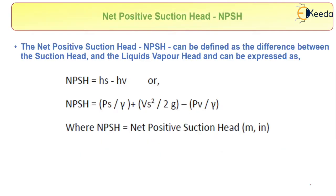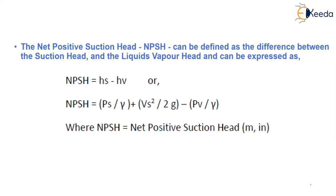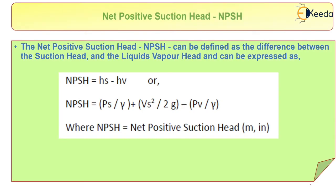Available net positive suction head and required net positive suction head. Here the net positive suction head is the difference between hs minus hv, or it is denoted as NPSH.